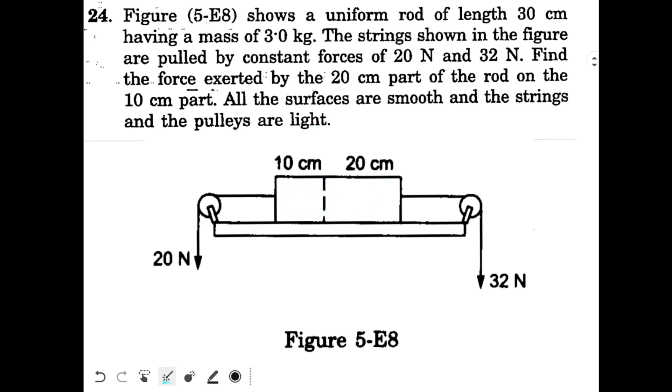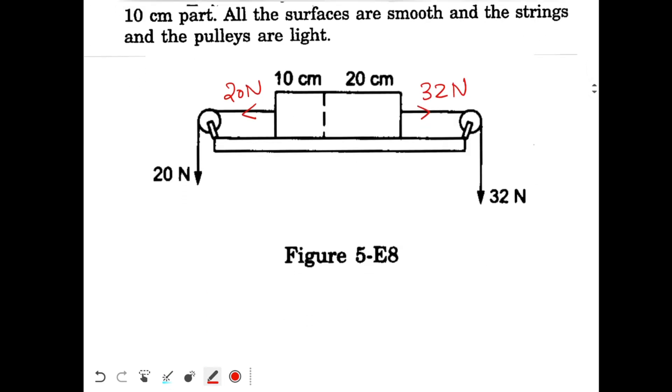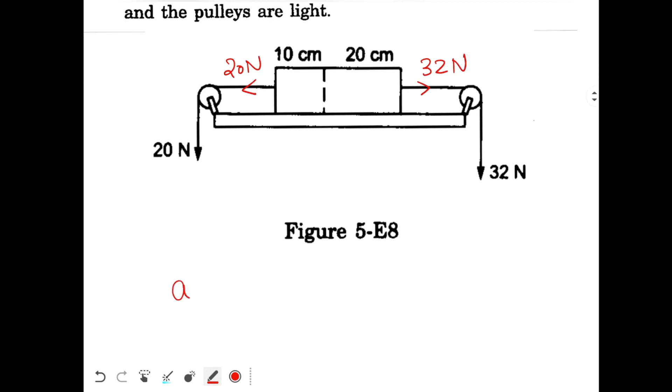First of all, here this string is pulling the block, so the tension over here will be 20 N. Similarly, this string is pulling with 32 N, so force on the block over here will be 32 N. The net force on the block is 32 minus 20. So we can find the acceleration of the block. Acceleration of the block will be 32 N minus 20 N divided by mass of the block. This will give you 4 m per second squared.